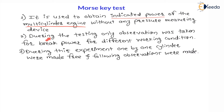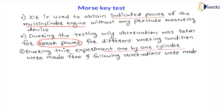During the testing, only observations are taken for brake power for different working conditions. With the help of these brake powers for different conditions, we are going to calculate indicated power. During this experiment, one by one cylinders are made free and the following observations are made. We will understand these observations with the help of a diagram.